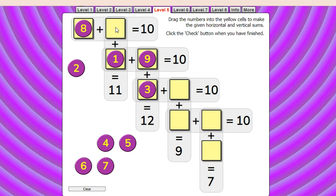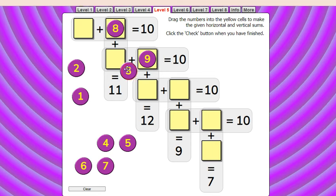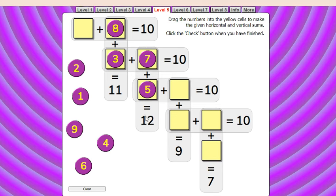So here also we have to be strategically placing the numbers. Let us move eight here. Okay, so eight plus three equals eleven and three plus seven equals ten. Then seven plus five equals twelve.